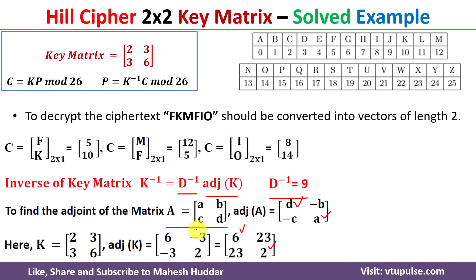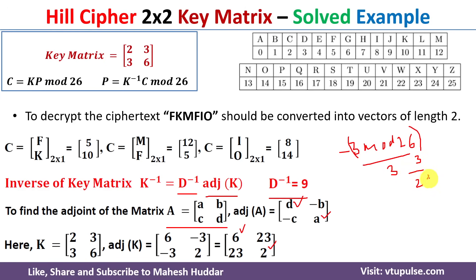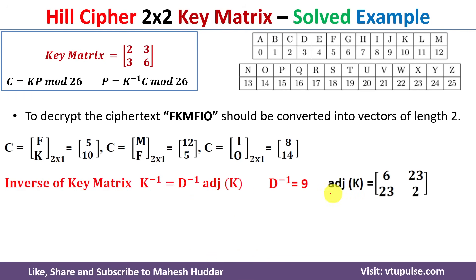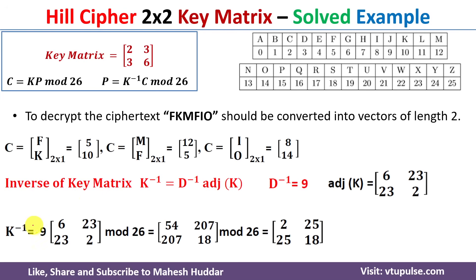To take the modulus of a negative number like −3 mod 26: first take the modulus of the positive part, 3 mod 26 = 3, then subtract from 26: 26 − 3 = 23. So −3 mod 26 = 23. Both −3 entries in the adjoint become 23. The adjoint of K mod 26 is therefore [[6, 23], [23, 2]].